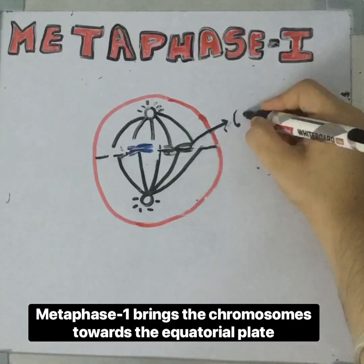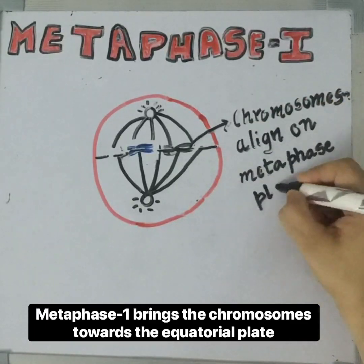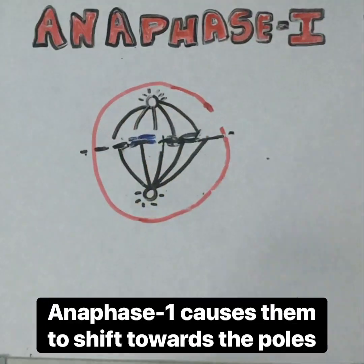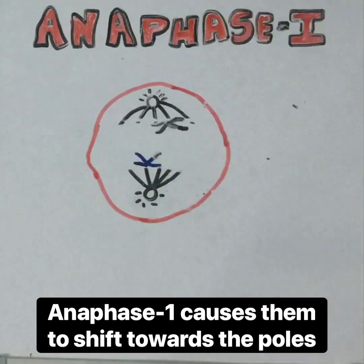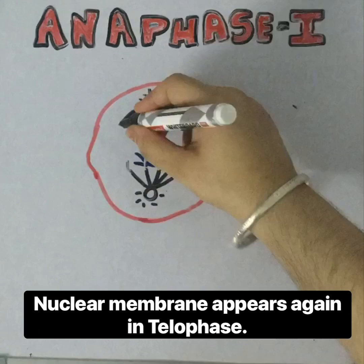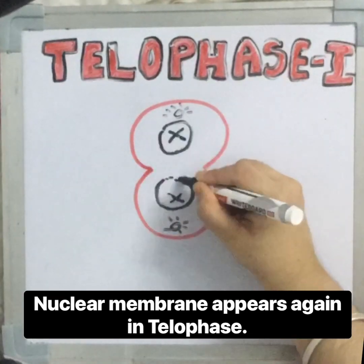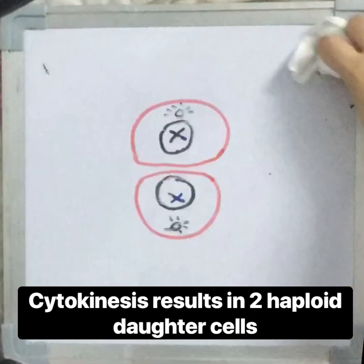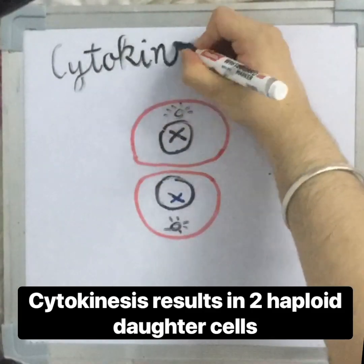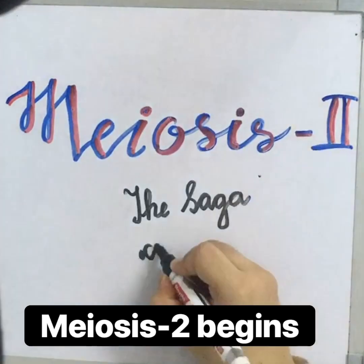Metaphase one brings the chromosomes towards the equatorial plate. Anaphase one causes them to shift towards the poles. The nuclear membrane appears again in telophase. Cytokinesis results in two haploid cells.